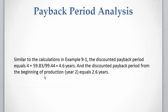Again, we can calculate this from the beginning of production, which starts at year two. So we deduct two years from 4.6 and report 2.6 years as the discounted payback period from the beginning of production.